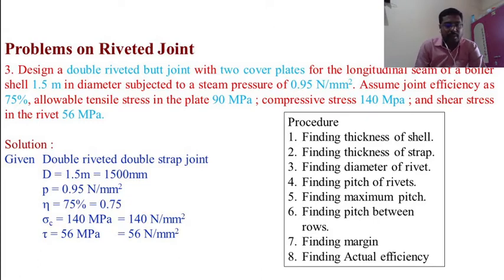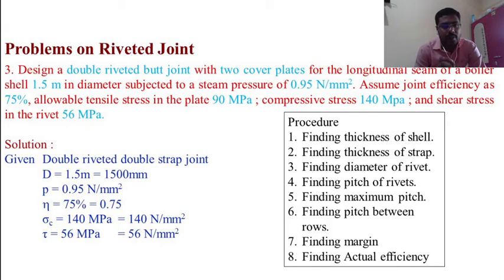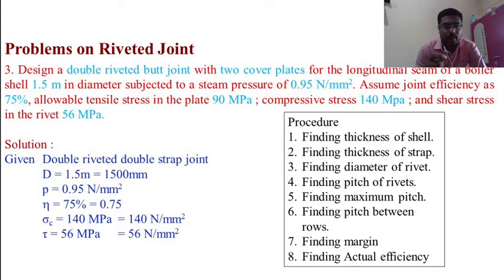Write down the given data. This is a double riveted double strap joint — two cover plates means double strap joint. D = 1500 mm, pressure = 0.95 N/mm², joint efficiency η = 75%, σc = 140 MPa, σt = 90 MPa, shear stress τ = 56 MPa.